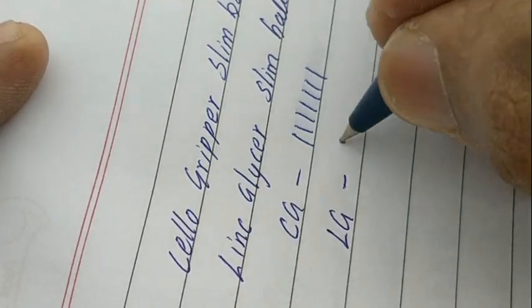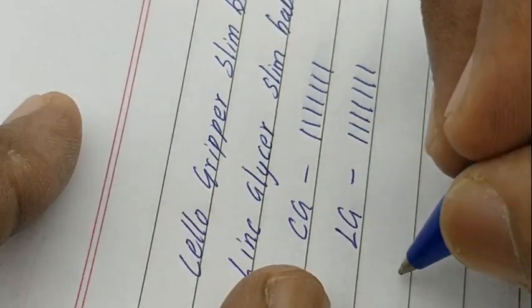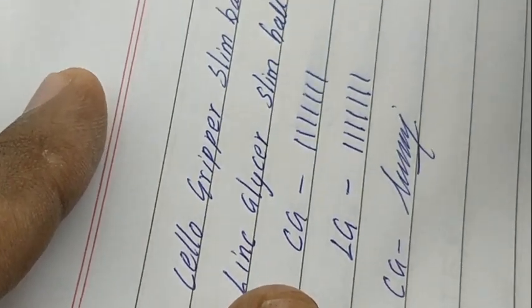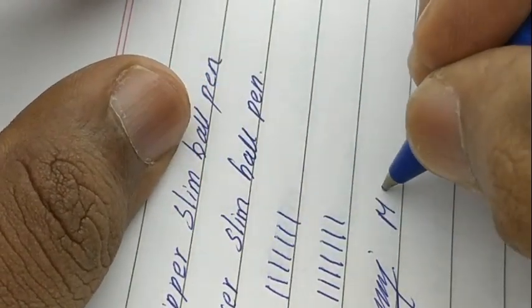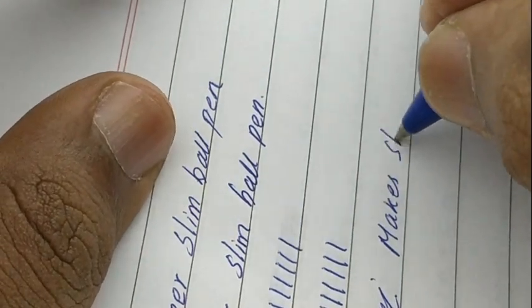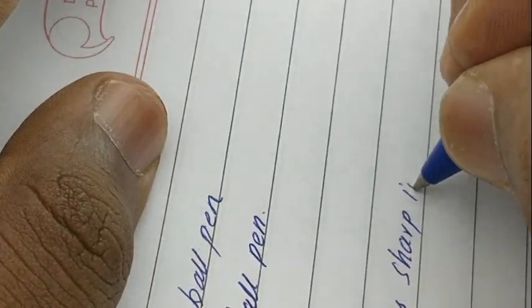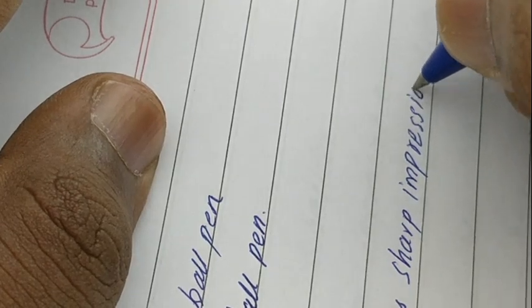We can see that Gripper gives a sharp impression while you write. Glycer is a bit smooth and varies its thickness as we write many pages.